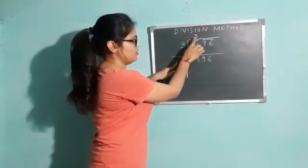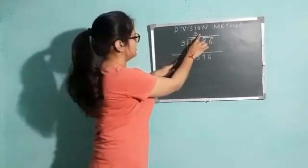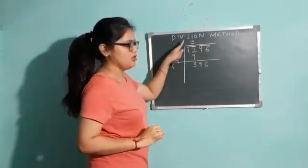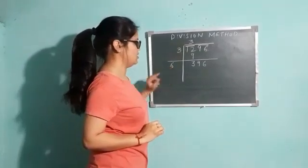Here, we write down double of the quotient. Quotient is 3 and double of 3 is 6. Double of 3 is not 9, double of 3 is 6.